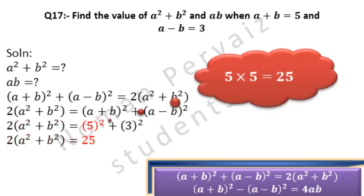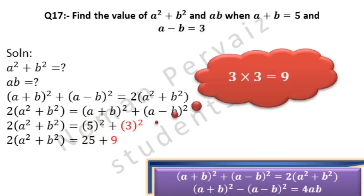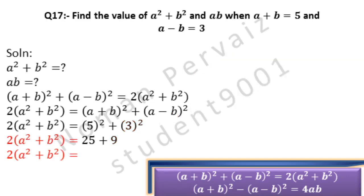We now open 5²: 5 multiplied by 5 becomes 25. Plus comes as it is. Then we open 3²: 3 multiplied by 3 becomes 9. So 2(a² + b²) = 25 + 9, and 34 is obtained by adding 25 and 9.